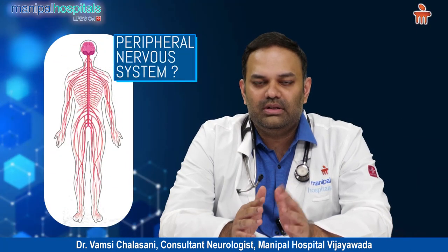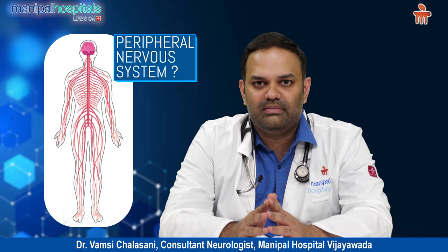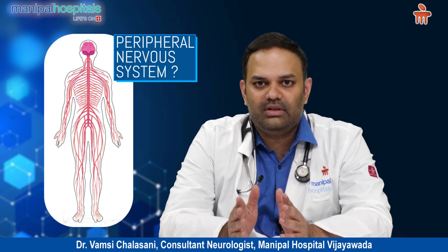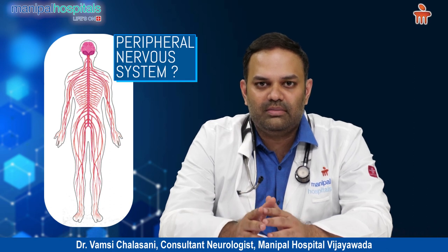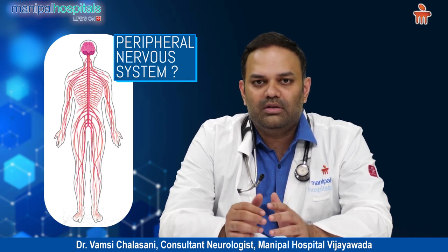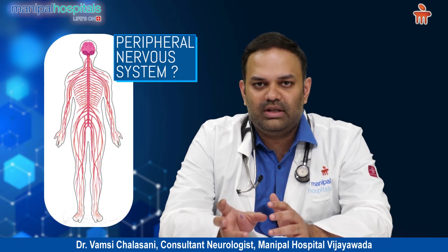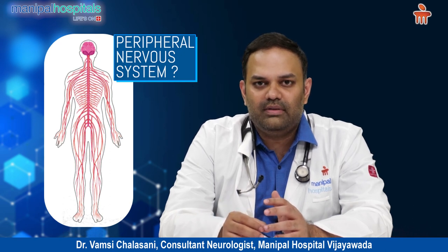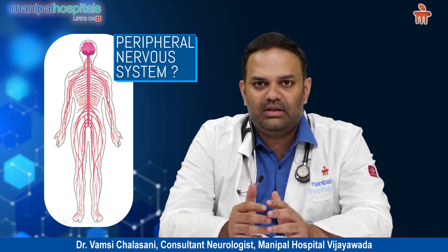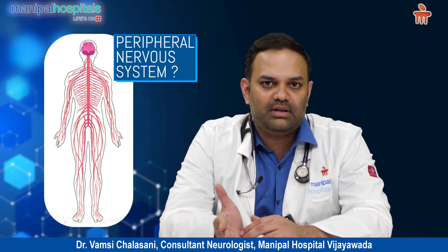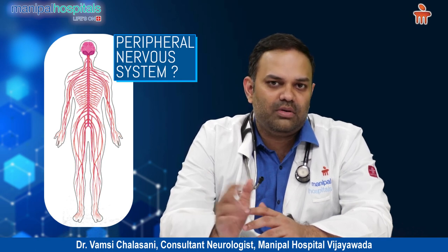We divide the nervous system into the central nervous system and the peripheral nervous system. Peripheral neuropathy involves the peripheral nervous system. It can present as mononeuropathy, mononeuropathy multiplex, or polyneuropathy.